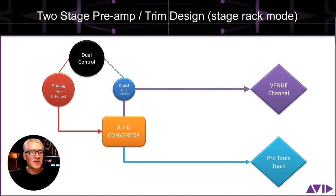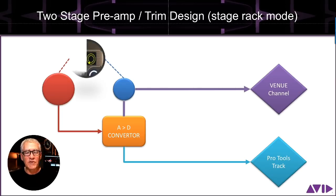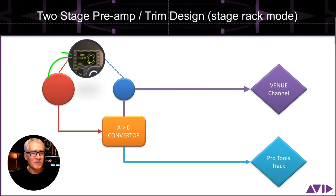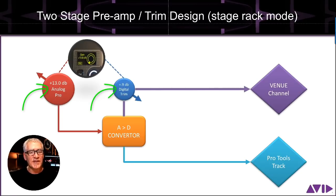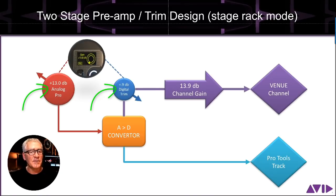Let's do a working example. Let's say we spin our input control up to 13.9 dB — you see that on the channel strip as the full channel gain. That translates into 13.0 dB of analog pre and 0.9 dB of digital trim. Those two things are added together to create a total channel gain of 13.9 dB. Real simple.